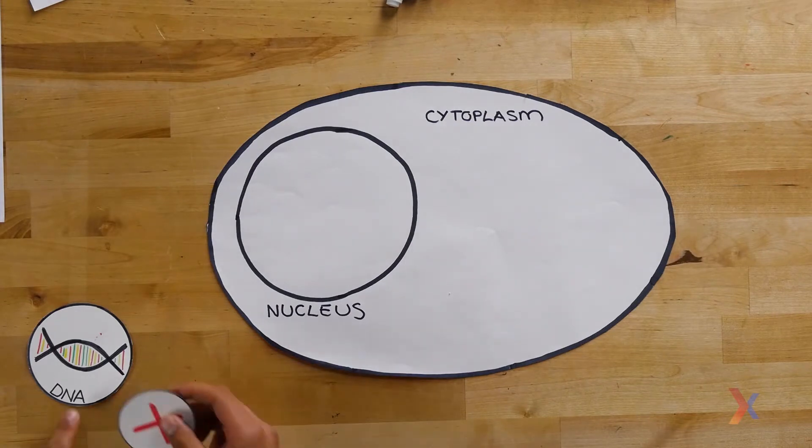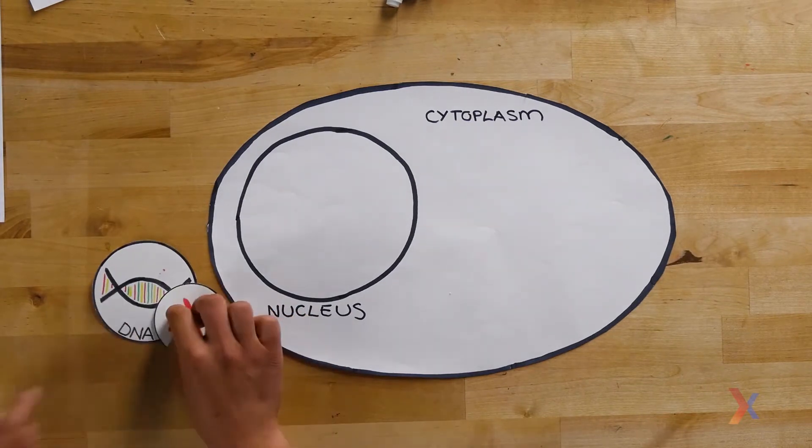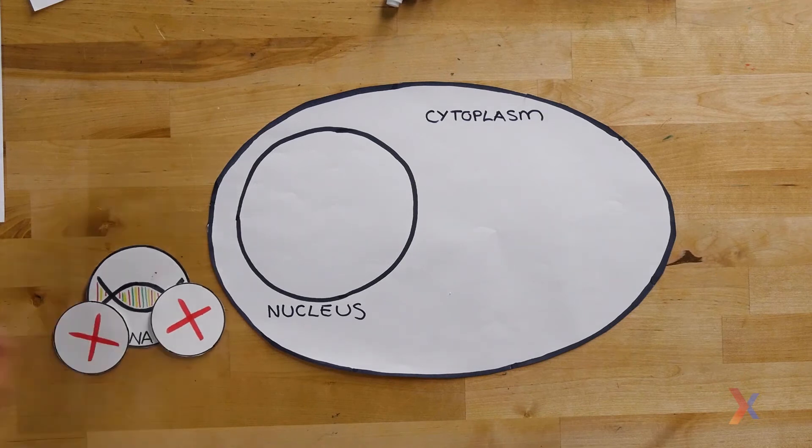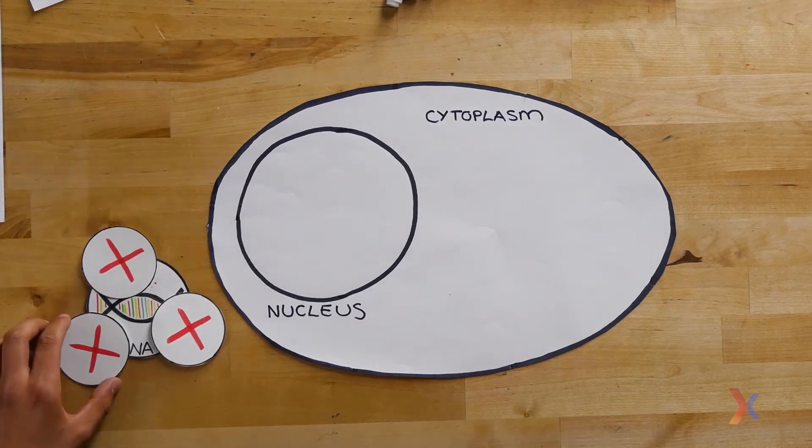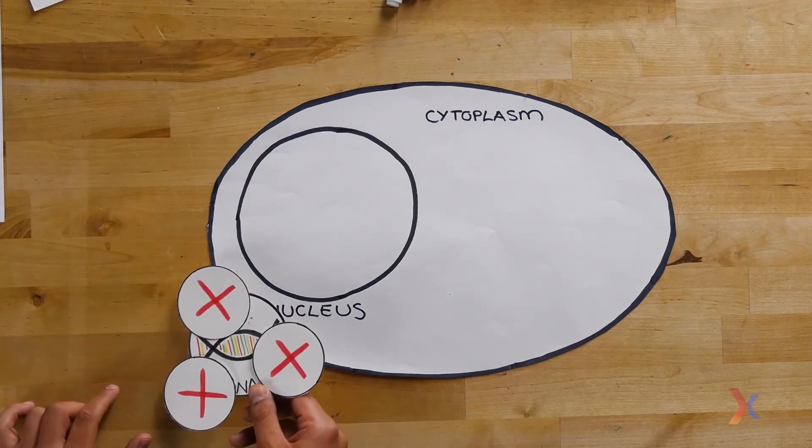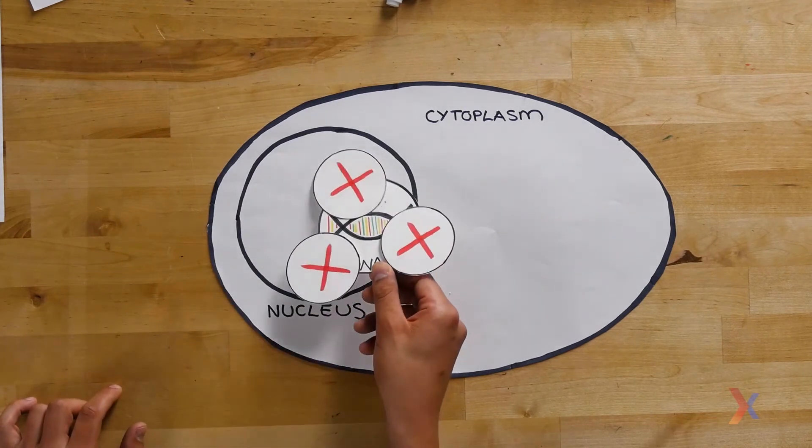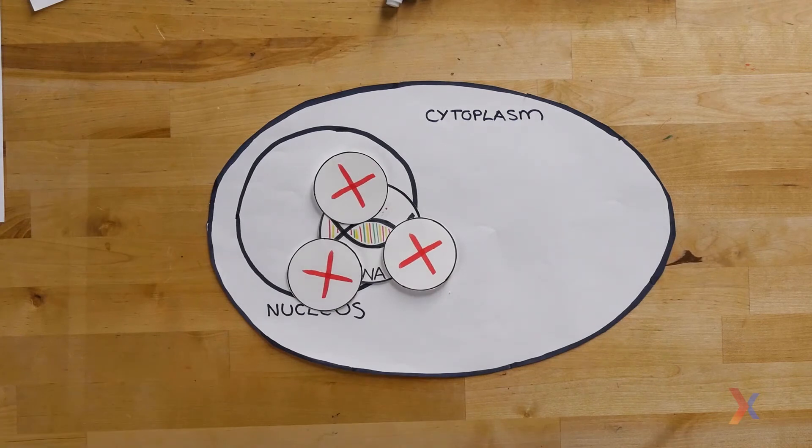The most commonly used method for chemical transfection is based on a system that uses cationic lipids. Cationic lipids are positively charged and are used to deliver DNA or RNA into cells. Because they are positively charged, these cationic lipids can form a complex with the negatively charged DNA. Because the cell is made up of a membrane, these DNA lipid complexes can then enter the cell, leading to the nucleic acid being taken up and eventually expressed.